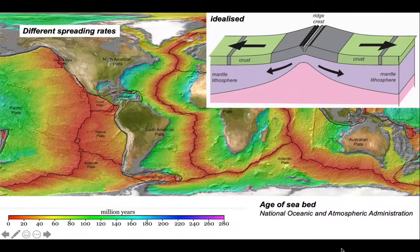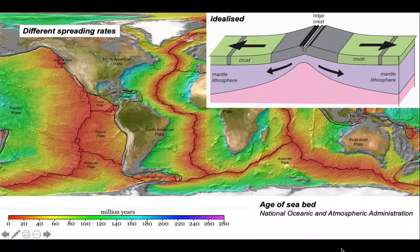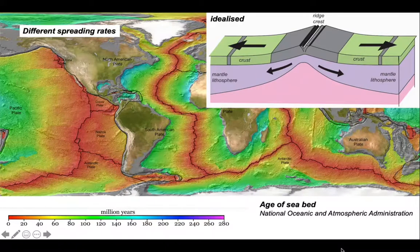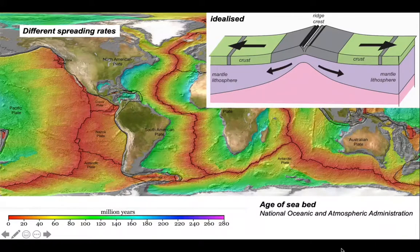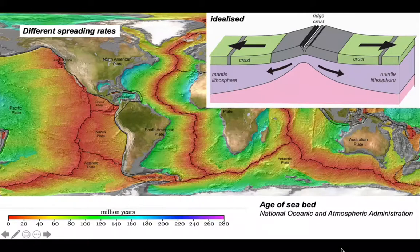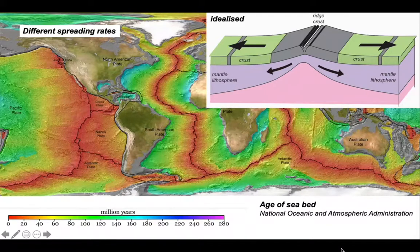But what about the lithospheric mantle? We can see that it's thin in our cartoon below the ridge crest but thickens as you move away from the ridge crest. This suggests that at least some of the mantle is added to the lithosphere later after the plate has moved off the ridge.